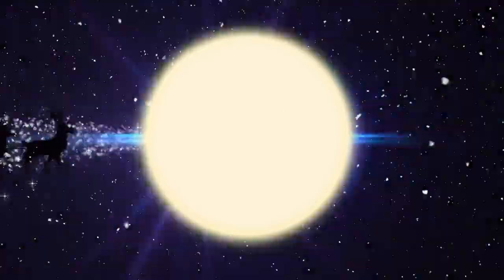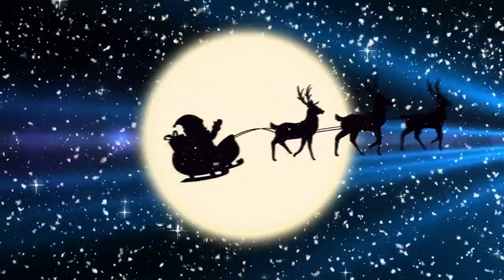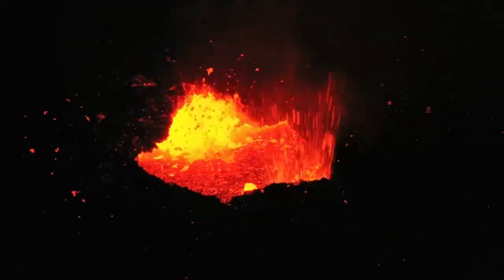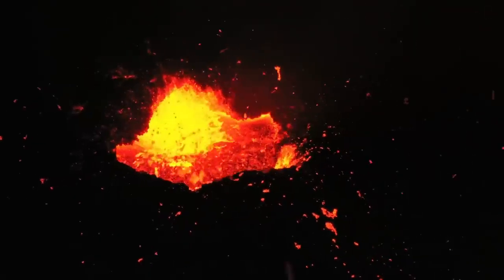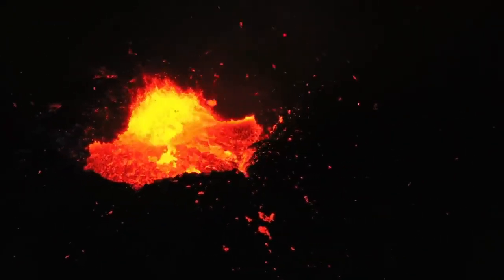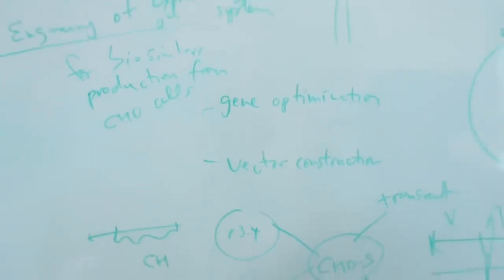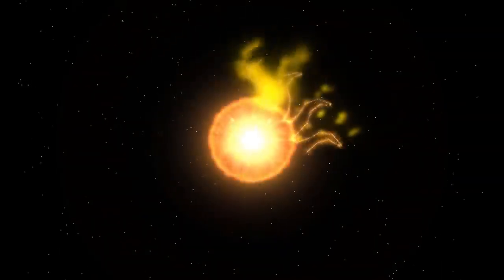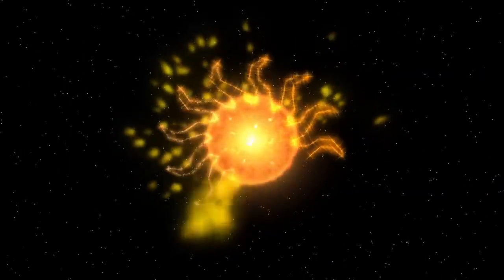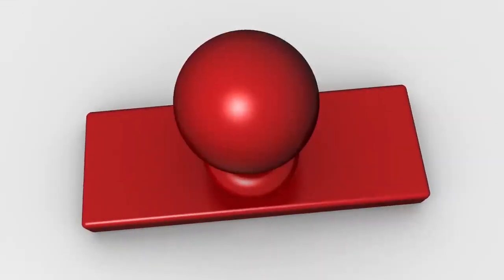Interestingly, historical records have noted that Betelgeuse's color has changed over time. Ancient Roman and Chinese texts suggest that about 2,000 years ago, Betelgeuse appeared yellow. By the 9th century, Arabic astronomers observed its reddish tint, indicating that the star has undergone significant changes over millennia. This color shift is not just a curious historical detail—it offers important insight into the star's evolution and the dynamic processes at play.